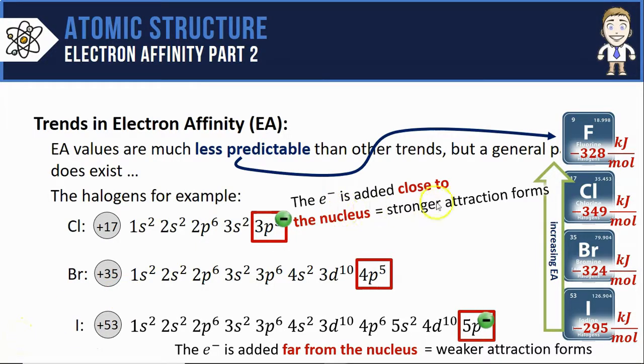The formation of a stronger attraction like we'll have with the chlorine atom results in more energy being released and therefore chlorine having a greater electron affinity value.